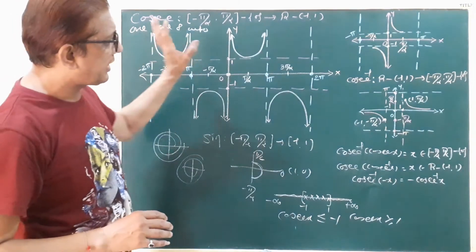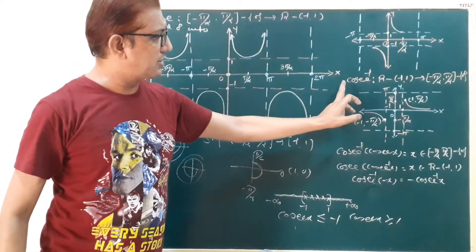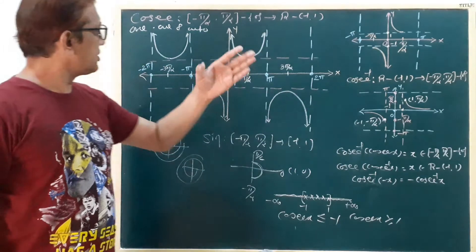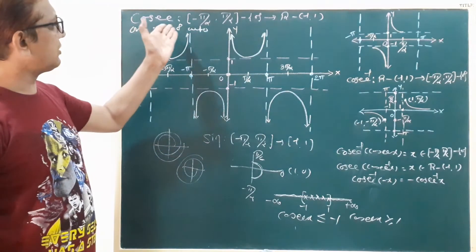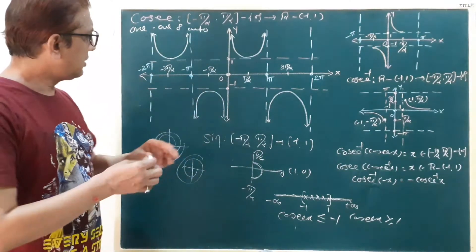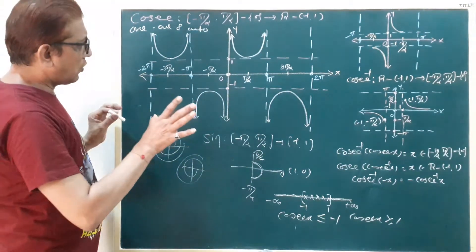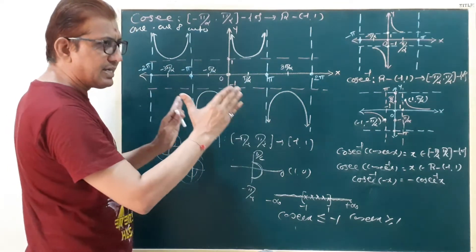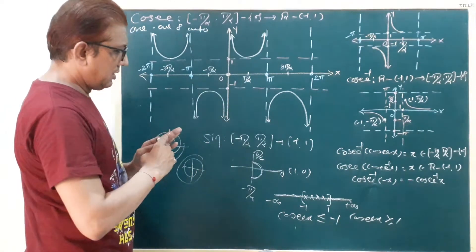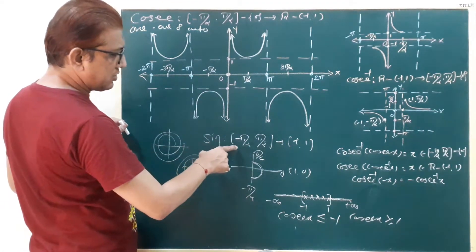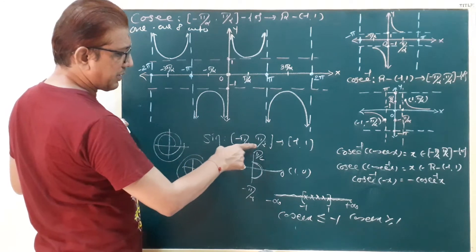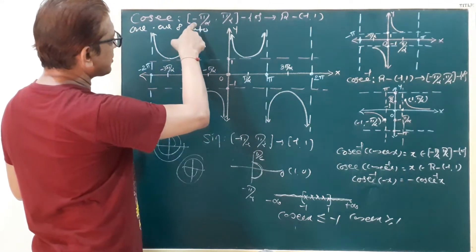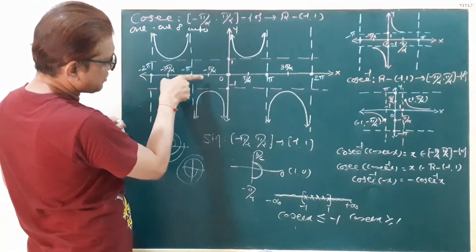We can easily find the cosecant inverse function because our conditions are already satisfied: one-to-one and onto. Our limited area has the domain of cosecant as minus pi by 2 to pi by 2. The sine domain is also minus pi by 2 to pi by 2.